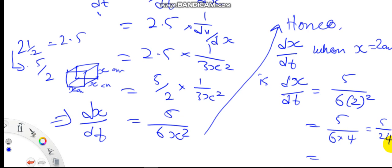Therefore, dx/dt is equal to 5 over 24 centimeters per second. dx/dt, remember we are talking about the side here, so centimeters per second with respect to time.